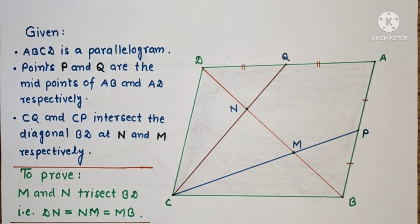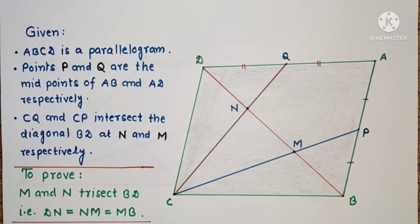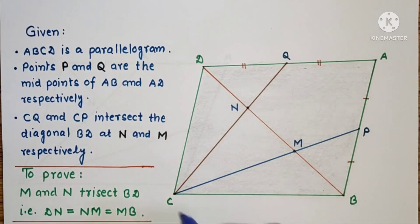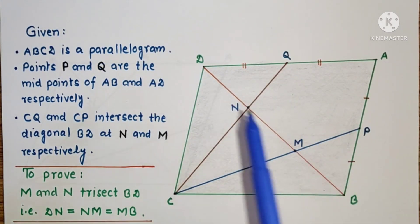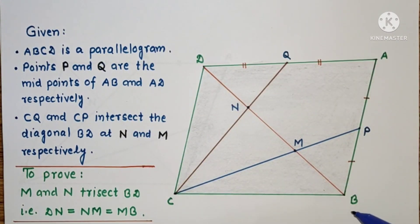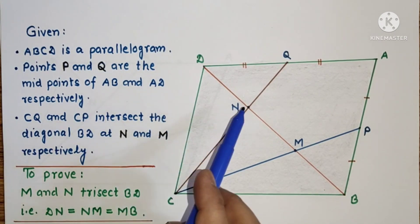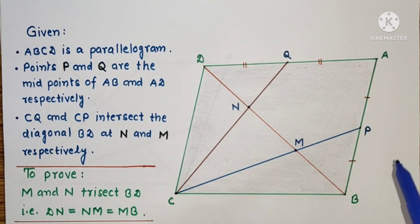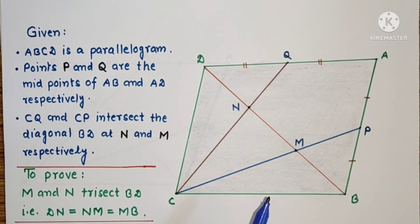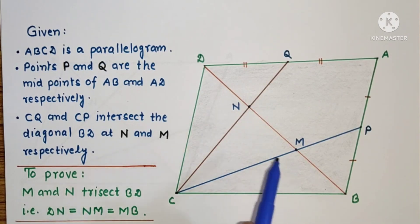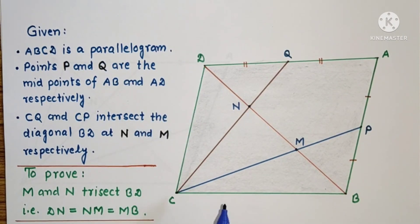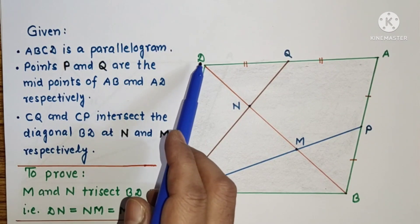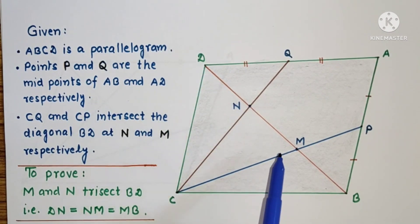Hello friends, welcome. This is a ninth standard geometry problem based on similarity. We are given a parallelogram ABCD in which Q and P are midpoints of DA and AB respectively. N and M are the points where CQ and CP intersect the diagonal DB. We have to prove that these two points trisect the diagonal DB, that means we are going to prove that DN is equal to NM is equal to MB.